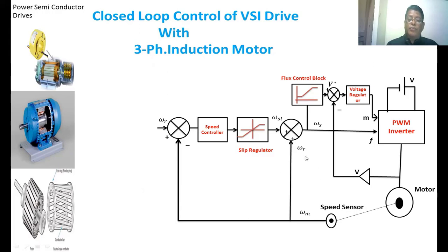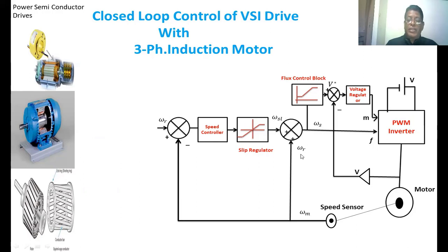It is also effectively a current loop. The voltage measurement block measures the voltage at the inverter output. The input of the speed controller is the error in speed — the difference between the reference speed and the actual speed of the motor. The output of the speed controller is given to the slip regulator, which sets the reference slip speed. Adding the reference slip speed to the actual speed of the induction motor gives the synchronous speed. The synchronous speed divided by 2π gives the frequency command, which is given to the PWM inverter. The forward path is thus completed.